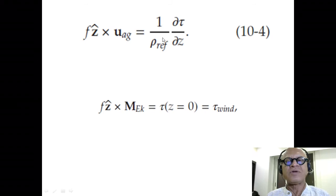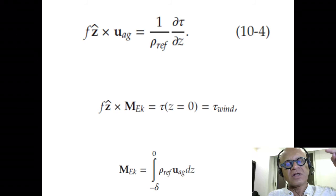We can easily write the integral of this equation from the bottom of the Ekman layer (the friction layer) to the surface where wind stress comes in. The integral becomes f ẑ × M_Ek, where M_Ek is the transport going from minus delta to 0: ρ_ref times u_ageostrophic integrated in the z direction.